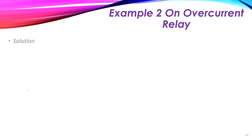How can we do this? First, we need to get the pickup current, the plug setting multiplier, and then from the table we will get the time. For relay number one, the fault current flowing inside the relay equals the actual fault current of 2000 amperes multiplied by the CT ratio of 1 over 200, so the current flowing inside the relay is 10 amperes.